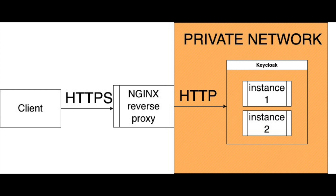One caveat here is that if you do this, you want to make sure that the backend servers are in a private network, and only the load balancer can send traffic to them. You don't want to do this on a public network because that defeats the purpose — if Nginx sends HTTP requests to your backend server, that traffic is not encrypted and easily visible. So make sure that this is in a private network and only your load balancer can send traffic to those backend servers.